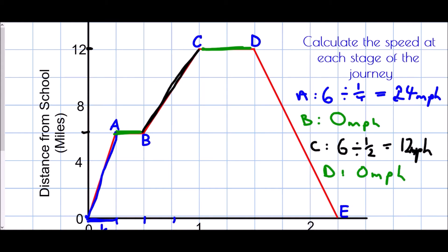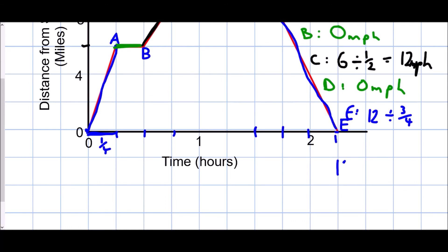Finally, from D to E, how far has the bus travelled? It went from 12 miles away back to the school, so they travelled 12 miles. How long did it take? It took three quarters of an hour. So that's 12 divided by three quarters — using our dividing by fractions method: copy, change, flip — that's 12 times four over three, which gives 48 over 3, which is 16 miles per hour.